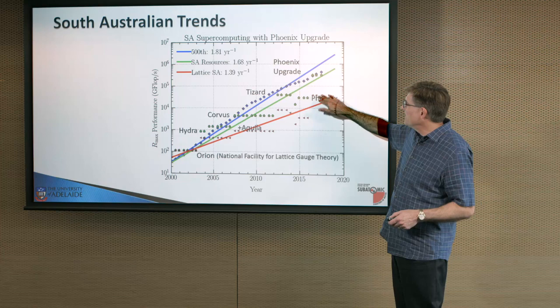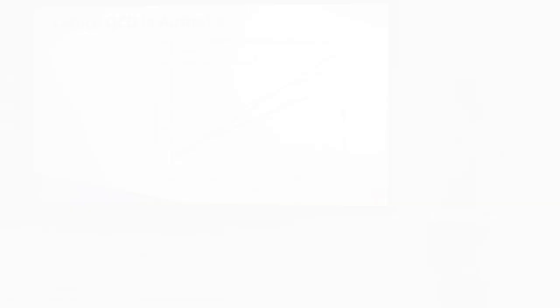And so when you put it all together, Lattice QCD resources in Australia, compared to the top 500, we're not where we need to be. We need to be here. But we're doing fairly well. We're within a factor of six. And it's a lot better than a factor of 30 that we were dealing with back in 2011.